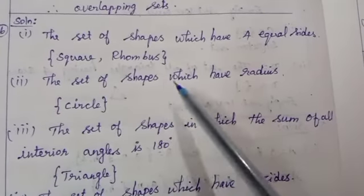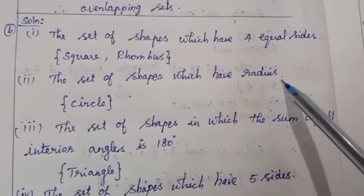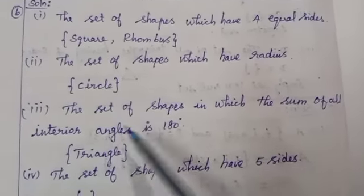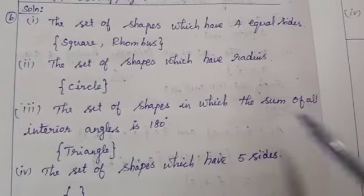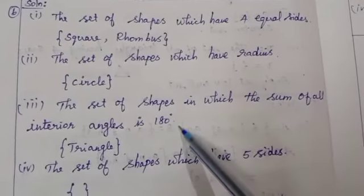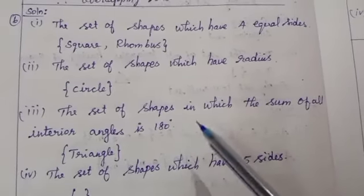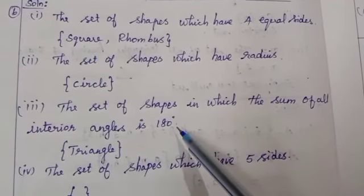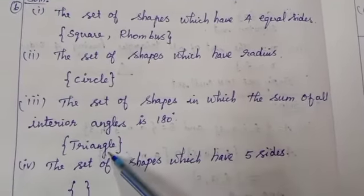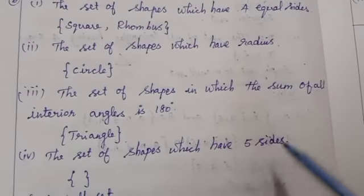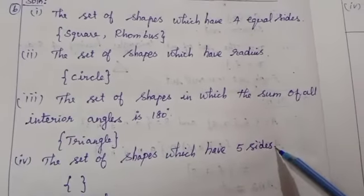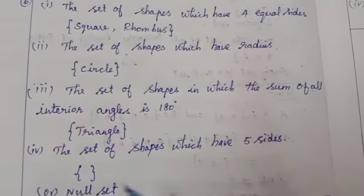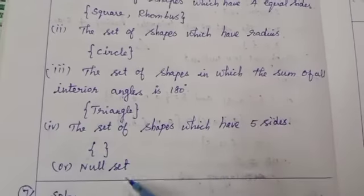The set of shapes which have a radius — which one has a radius? Circle. Write inside the set bracket. The set of shapes where the sum of all interior angles is 180 degrees — that is triangle. The set of shapes which have 5 sides — from the given set no shapes have 5 sides, so it is empty set or null set.